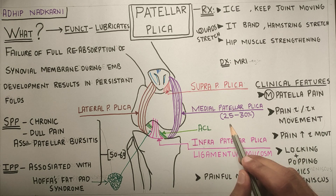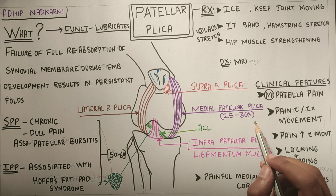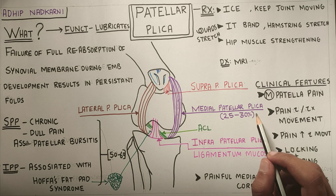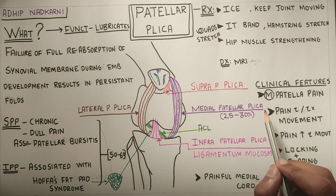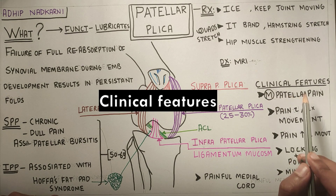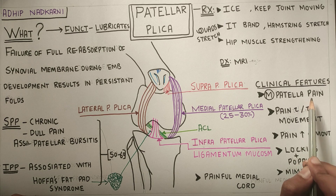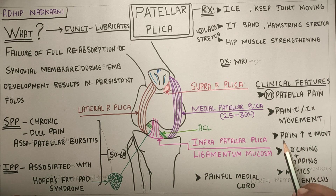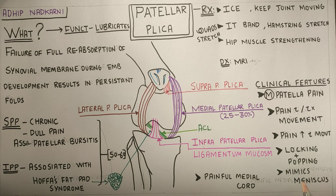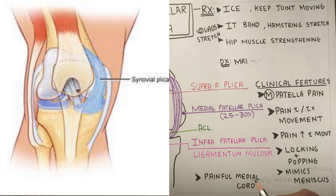Although it's seen in only 25 to 30 percent of the people, it's clinically very significant. Most cases of patellar plica syndrome involve the medial patellar plica. Its clinical features are pain on the medial side of the patella, pain with and without movement — the pain will increase with movement — and also there will be locking and popping of the knee joint. It closely mimics meniscus. It also has a painful medial cord which can be felt on palpation.